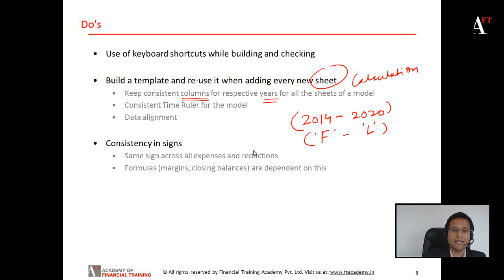Consistency in signs. Always ensure that you have the same sign across all the expenses and reductions. This is important because your formulas are dependent on this. Formulas like margins or closing balances are consistent only if you follow a consistent sign convention throughout the model.